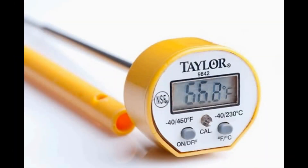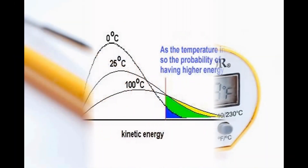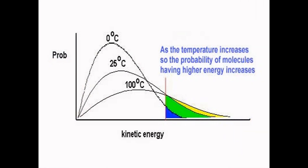All that you are measuring with a thermometer is the average temperature. The different specific temperatures going on inside are arranged according to what is called a Boltzmann distribution curve, and that distribution is what changes with heating.